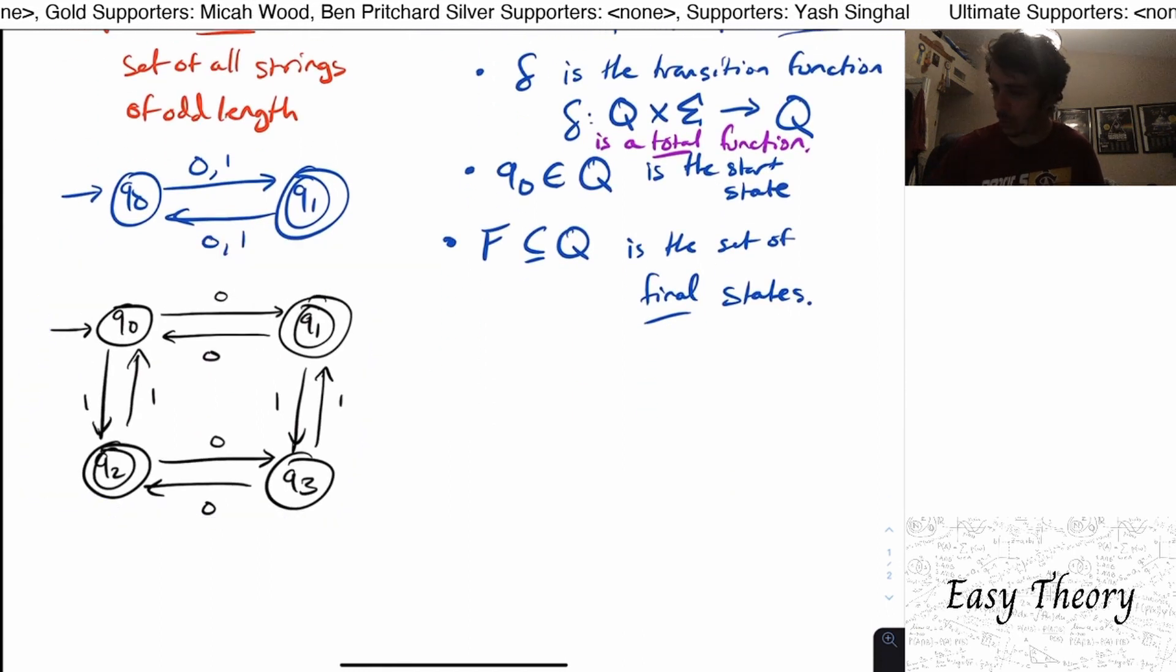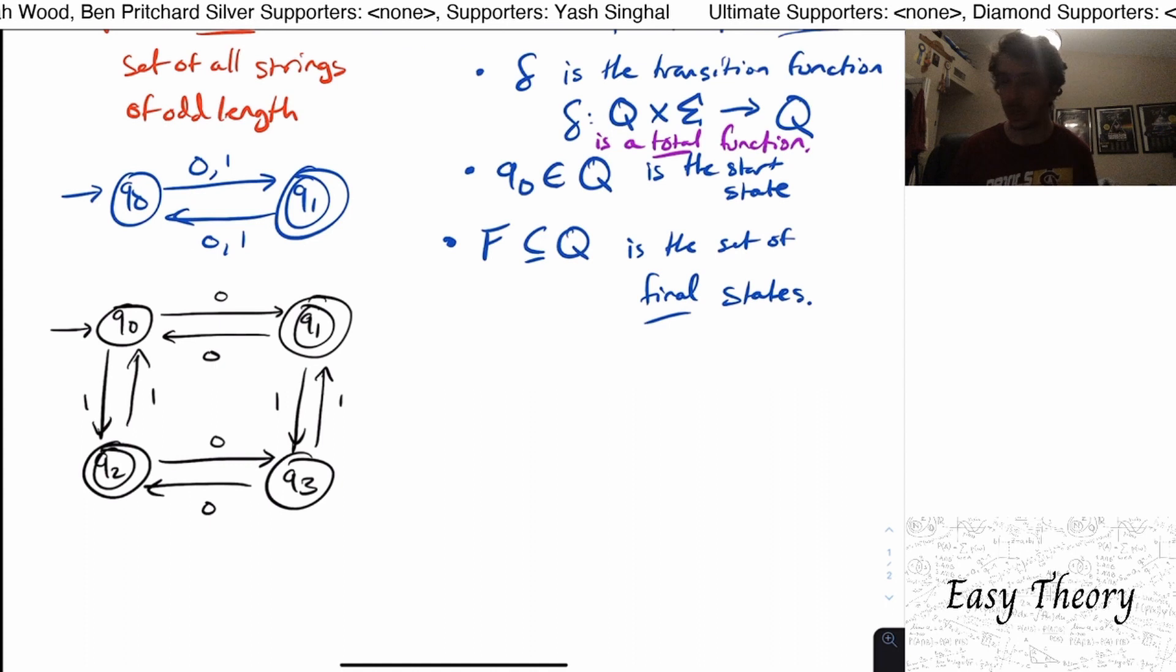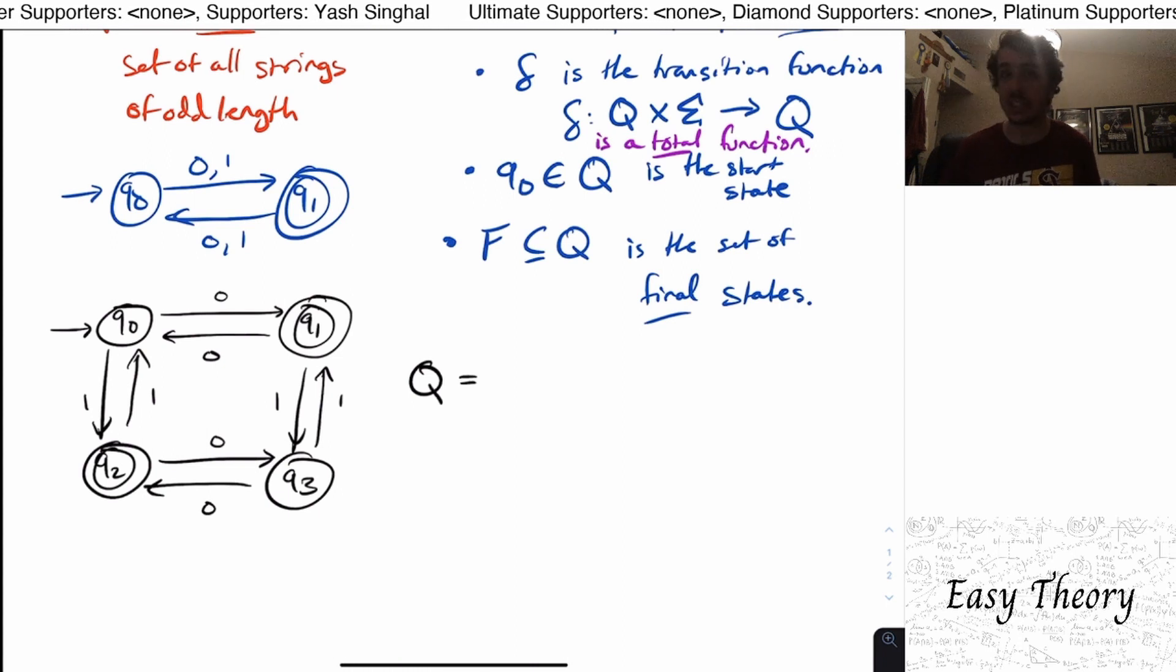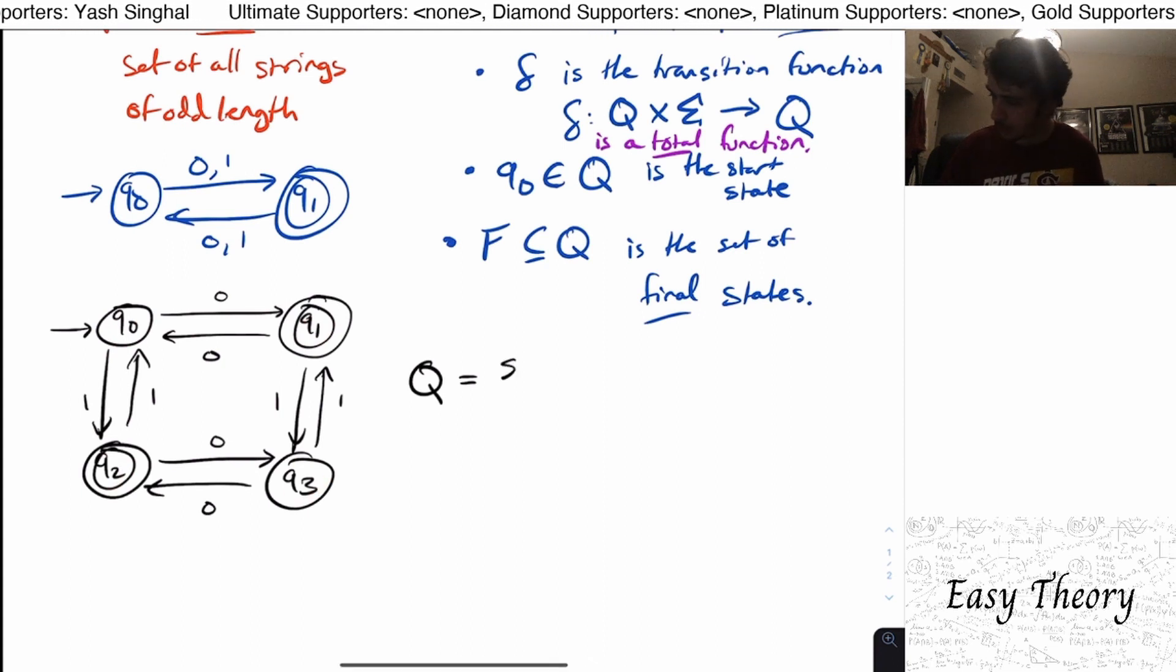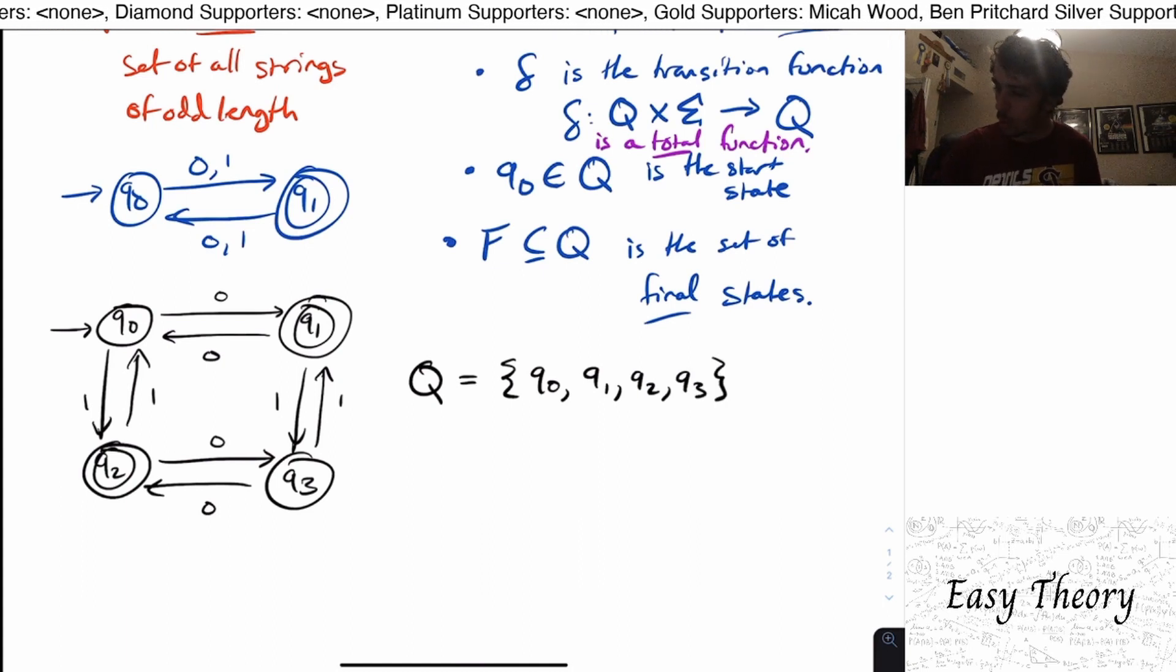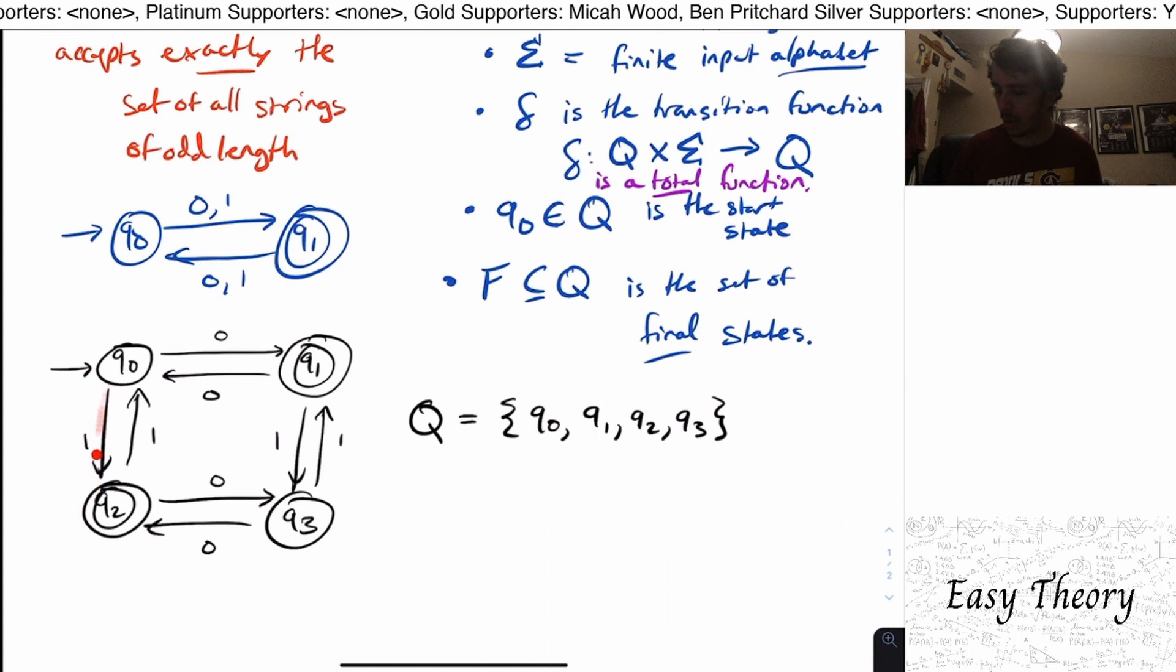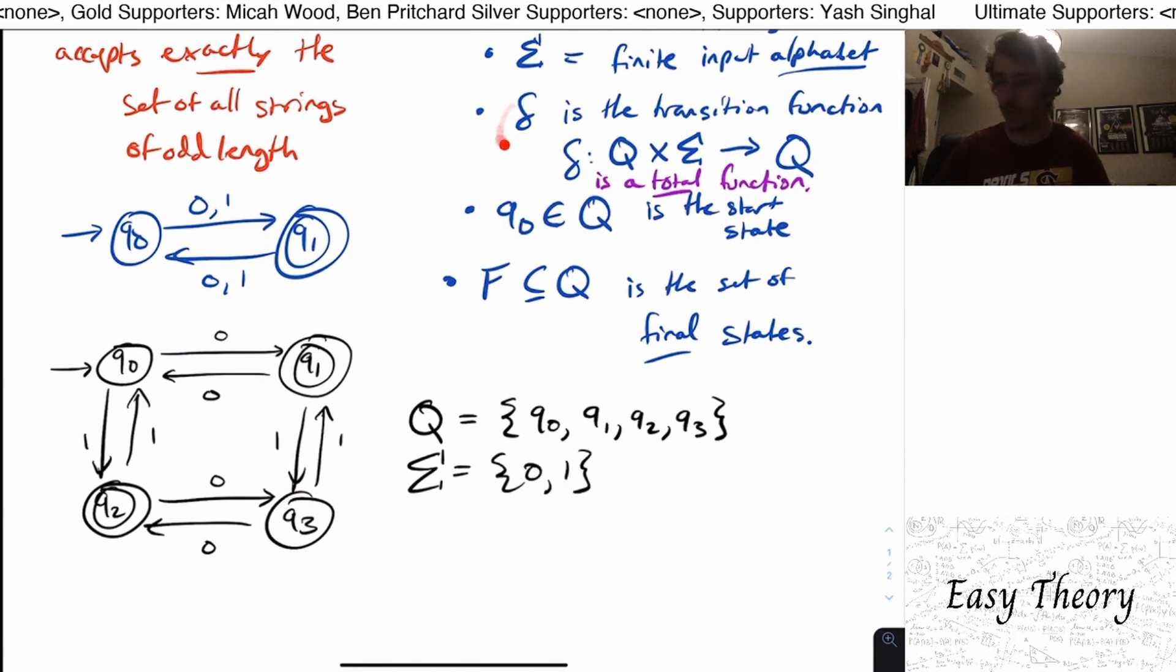So let's actually define the DFA that we have up here in a formal way. So I'm going to copy it down here. So let's define this formally. So in order to define a DFA in a formal way, we need to specify the five parts, q, sigma, delta, q, 0, f. So q here is the set of states, which are q, 0, q, 1, 2, and 3. So I'm going to write that with set notation. So with curly brackets and comma separating the names. They don't have to be in order, but I like putting them in order. Well, what is the input alphabet? We got to specify what the characters are on the transitions. Well, there's a 0 here and a 1 here, and I don't see any other characters on the transitions. So sigma here is 0, 1.